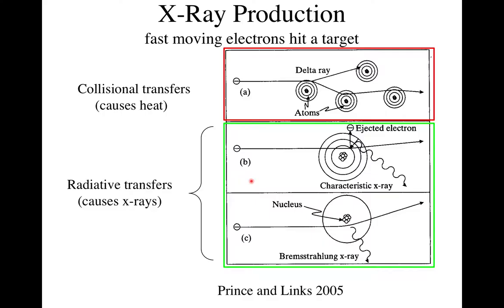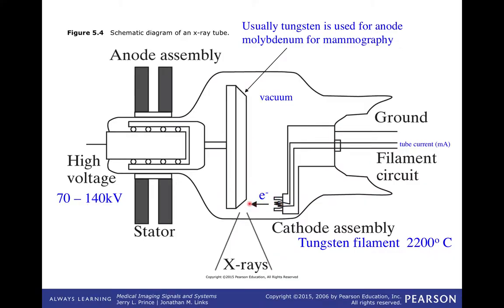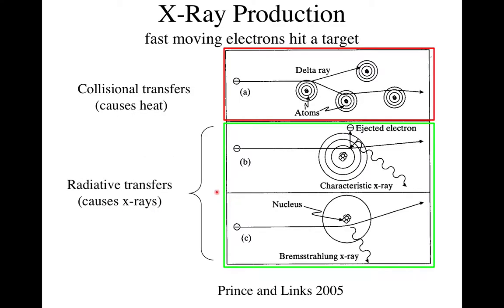How are X-rays produced in the target? When a single electron hits the target, about 90% of them just hit other electrons in the tungsten, knock them, and another electron flies through at somewhat lower velocity — a cascade that just heats up the target. That's 90% of what happens; it doesn't produce any photons, just heat. There are two primary ways of producing photons.